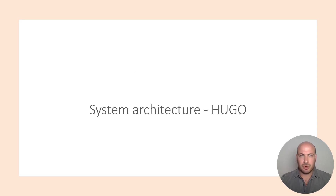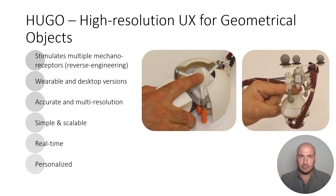Let's move over to the system architecture of Hugo, the device we developed. Hugo stands for High-Resolution UX for Geometrical Objects, which is the main benefit of this device — recreating a high-resolution 3D surface. Hugo can mechanically stimulate multiple mechanoreceptors and was designed by reverse engineering the sensing capabilities of those mechanoreceptors. We developed two versions: a wearable version and a computer mouse-based version. The resulting feedback is very accurate and works in multiple scales. Hugo operates at very high frequencies in real-time, and the feedback can be personalized per user.